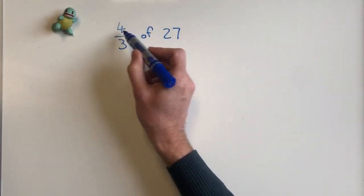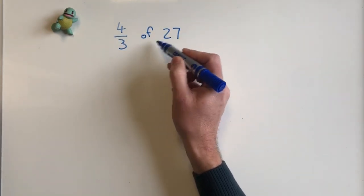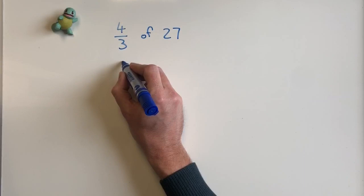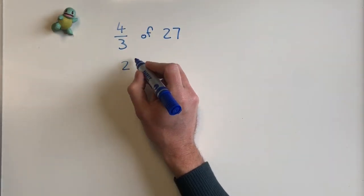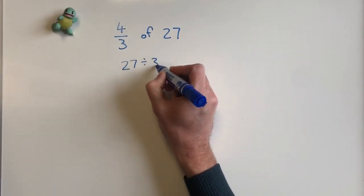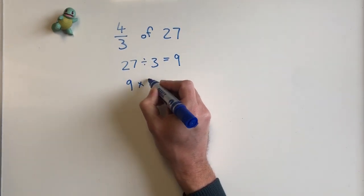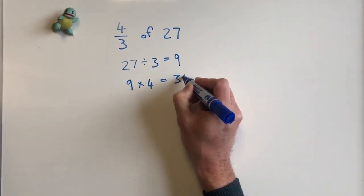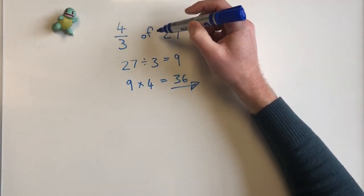So in this case I'm not going to multiply by four first. I'm going to divide by three first because then I'm going to have a smaller number, which I like. But you can multiply by four if you wanted to and then divide by three. But it's easier for me to say 27 divided by three because I know that is nine, and then nine times four I know is 36.